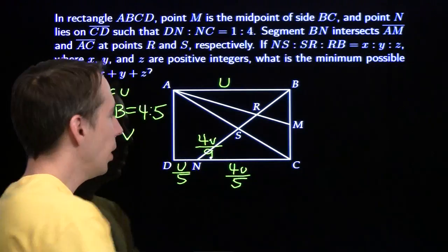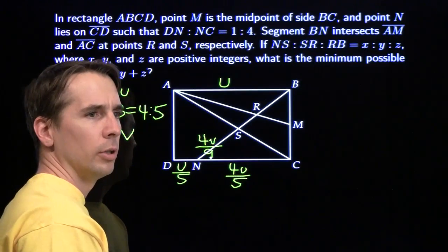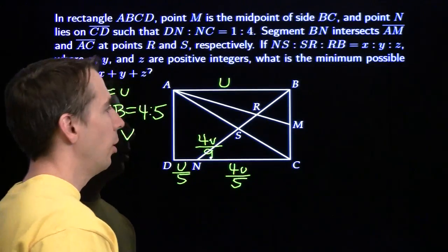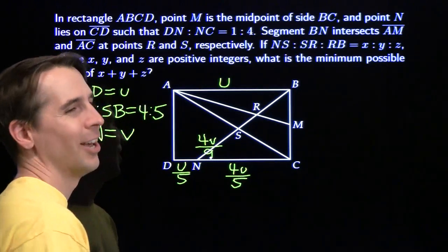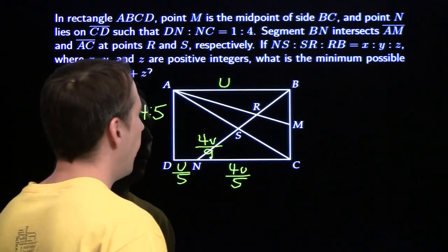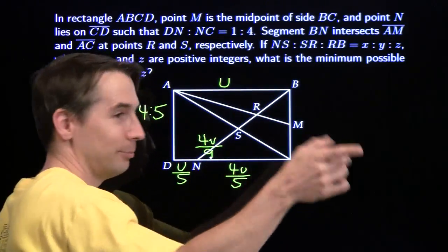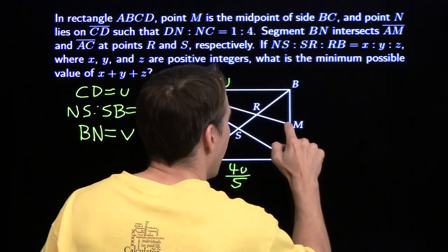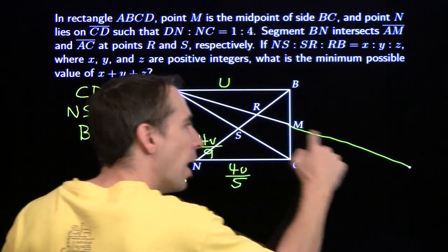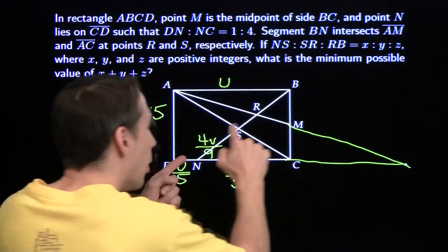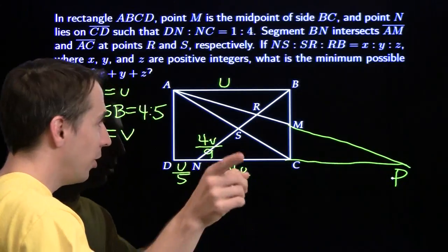We use the similar triangles we already found. But we need other similar triangles to go further. Harvey says: think outside the box. That's brilliant — we go outside the box. We extend the segment, and now we've got more similar triangles. We'll call this new exterior point P.